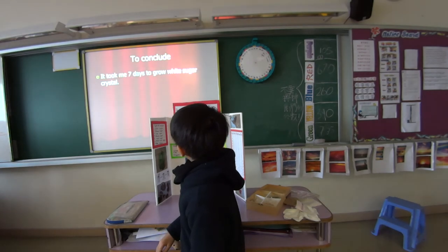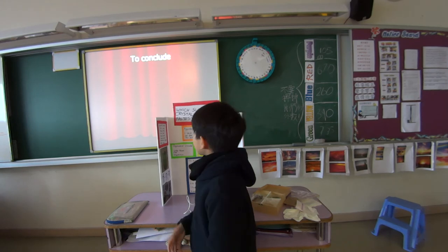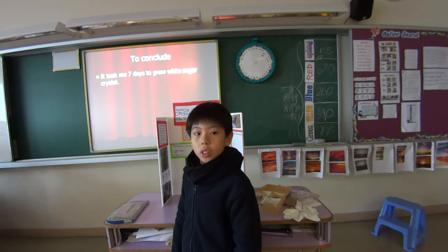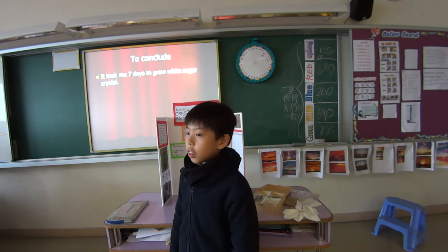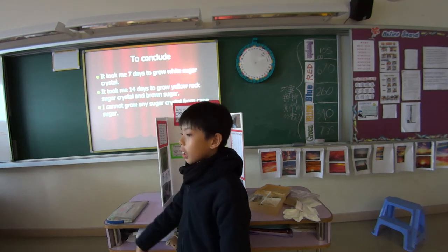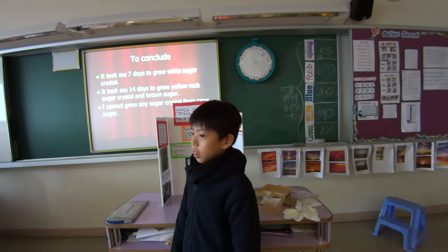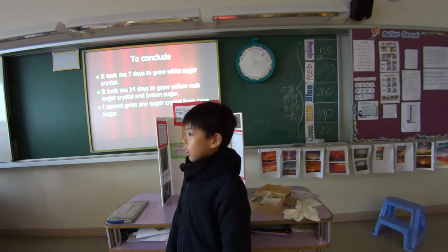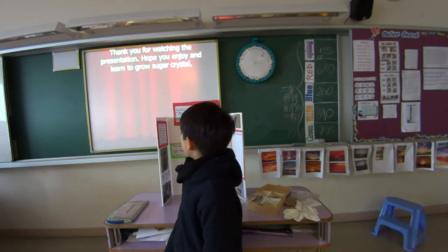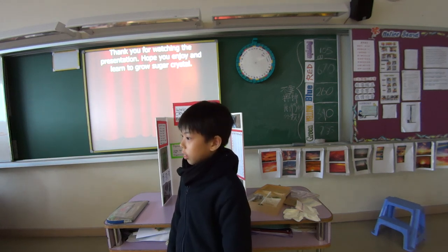Can you eat it? Yes, it will be yummy! It took me seven days to grow the white sugar, and it took me 14 days to grow the yellow rock sugar and brown sugar. I cannot grow any sugar from the cane sugar. So my hypothesis is right — the white sugar is the fastest to grow. Thank you for watching my presentation. Thank you.